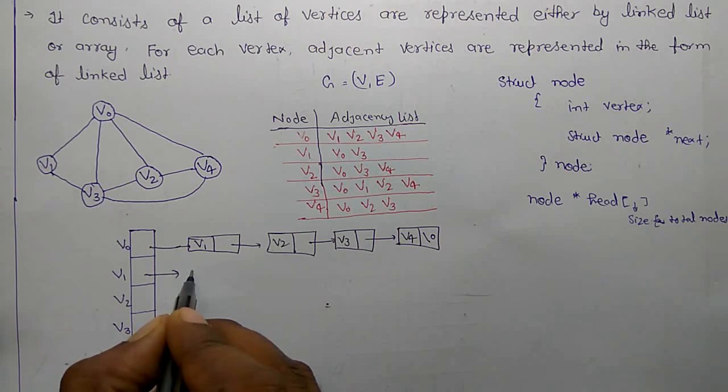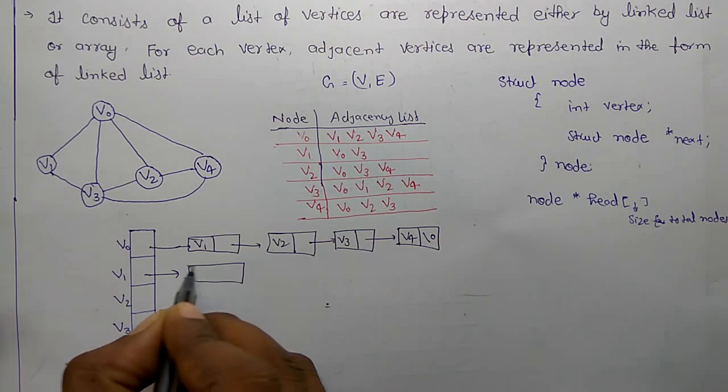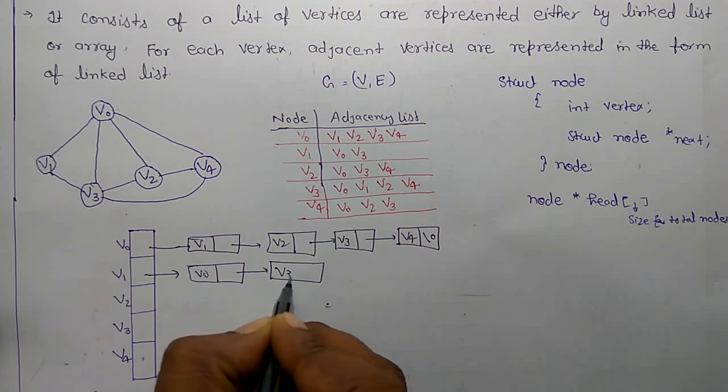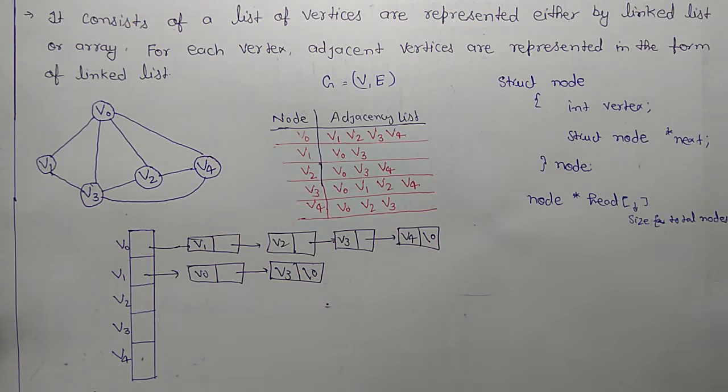Similarly V1 has V0 and V3. Similarly we can create for V2, V3 and V4.